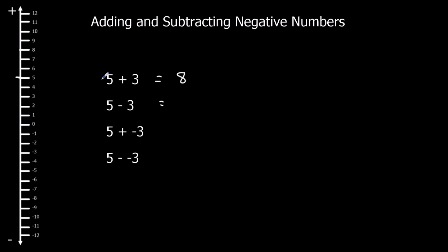Same again — 5 is our starting point, we're starting here. Subtract means this minus means we're going to go down. So we're going to go down 3 spaces: 1, 2, 3 — and that leaves us at 2.